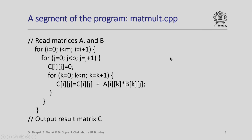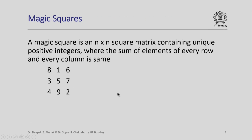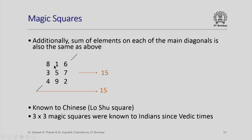We now look at magic squares. A magic square is an interesting n by n square in its basic form which contains unique positive integers. The integers are arranged such that the sum of elements of every row and every column is the same. Here is an example: 8 1 6 3 5 7 4 9 2. The sums — 3 plus 5 plus 7 is 15, 8 plus 1 plus 6 is 15, 6 plus 7 plus 2 is also 15, and both diagonals also sum to 15. These matrices were known to the Chinese as Loshu squares, and a 3 by 3 magic square was known to Indians since Vedic times.